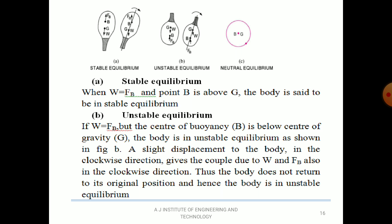For unstable equilibrium — center of buoyancy is below the center of gravity; G is above B. Weight W acts through G and buoyant force FB acts through B. Give a small angular displacement clockwise — the couple produced due to W and FB is also in the clockwise direction. The balloon does not come back to the original position. This condition is called unstable equilibrium.